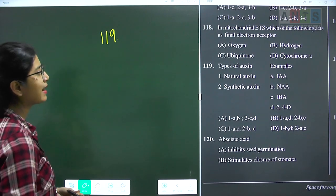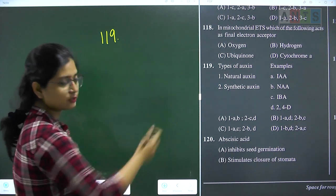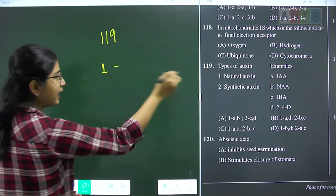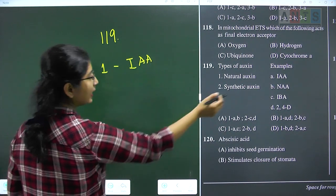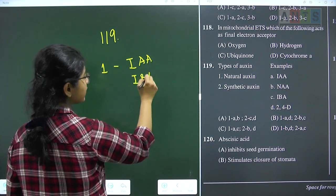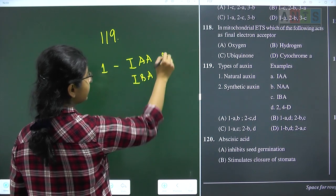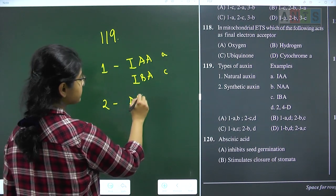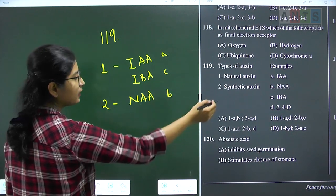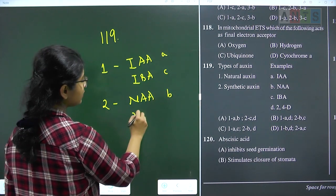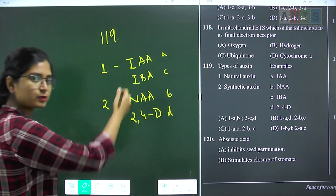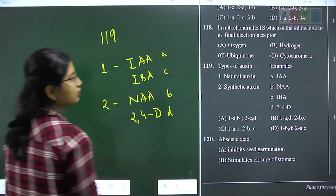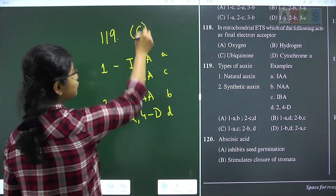Question 119: match the type of auxin (natural or synthetic) with an example. Natural auxins: IAA (indole-3 acetic acid) — A, and IBA (indole-3 butyric acid) — C. Synthetic auxins: NAA (naphthalene acetic acid) — B, and 2,4-D (2,4-dichlorophenoxy acetic acid) — D. So 1-AC, 2-BD. Question 119 answer is option C.